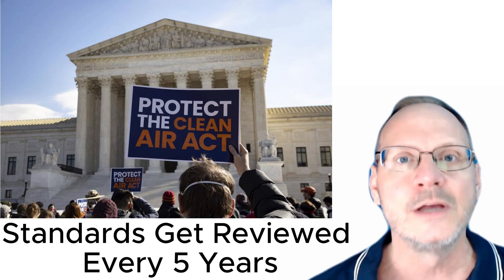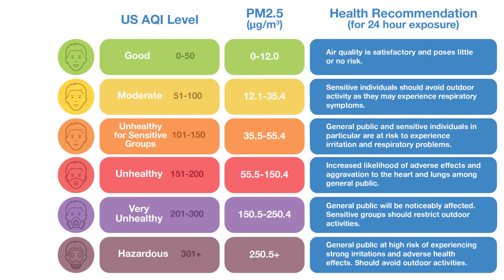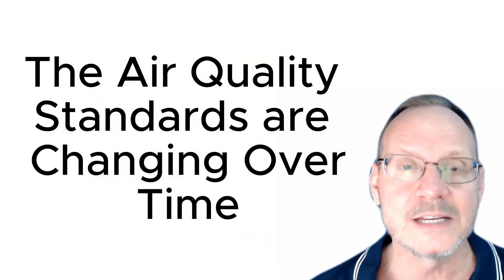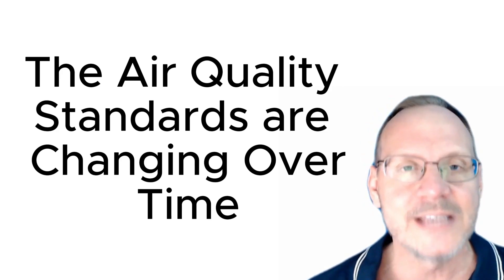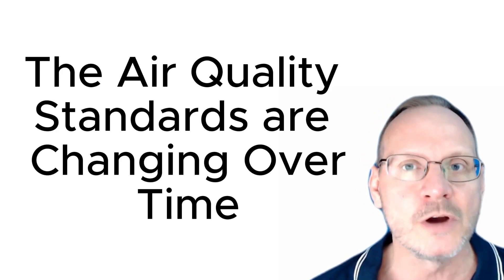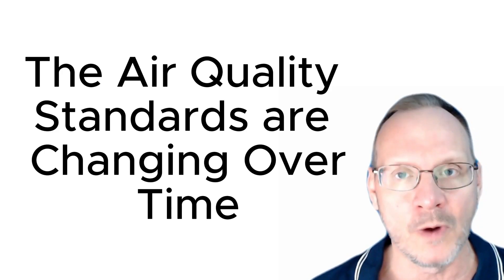The Clean Air Act of 1990 requires the EPA to review its National Ambient Air Quality Standards every five years to reflect evolving health effects information. PM2.5 stands for particulates that are 2.5 microns or less in diameter. The PM2.5 standards were lowered in 2012 and will also be lowered again towards the end of 2023. We need to realize that some of what was considered good air quality 10 to 25 years ago is not considered good air quality today.